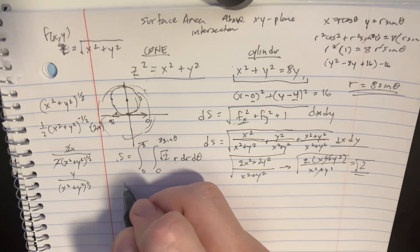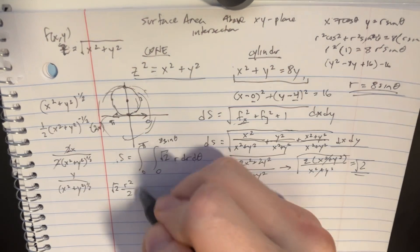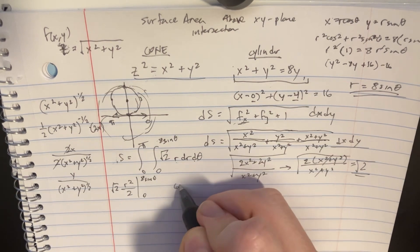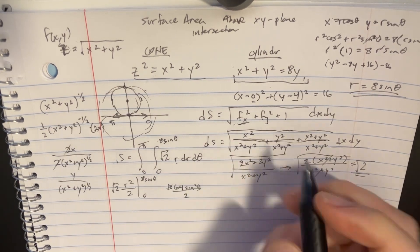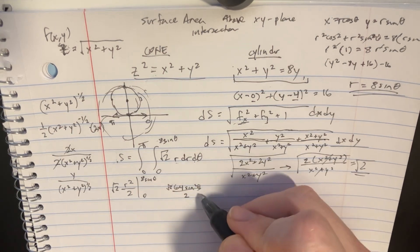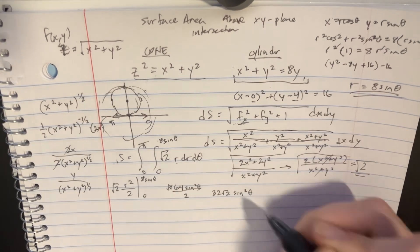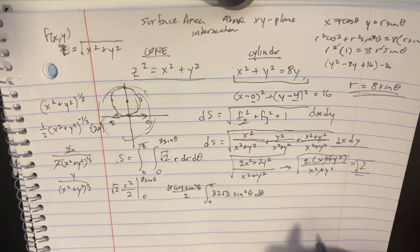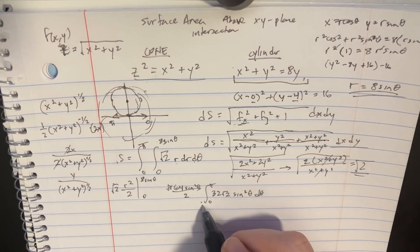Now we integrate over r. Integrating r dr gives r squared over 2, and with the square root of 2 factor, evaluating from 0 to 8 sinθ gives 64 sin squared θ over 2 times the square root of 2. The zero term drops out, leaving 32 square root of 2 times sin squared θ, which becomes the integrand for the remaining integral from 0 to π in dθ.